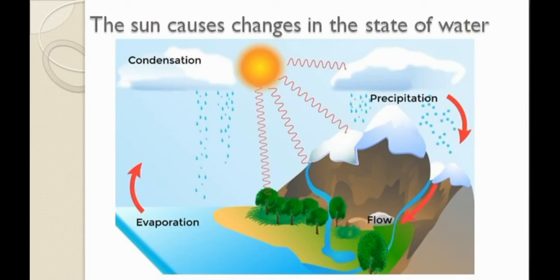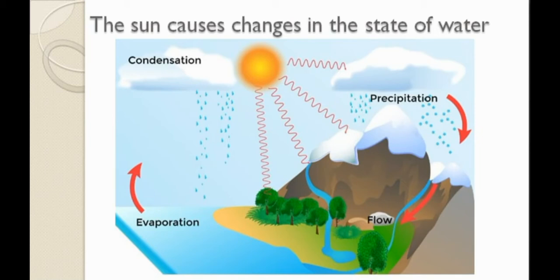Now let's see how the sun causes changes in the states of water. Clouds bring us rain because the heat of the sun changes water into water vapor — this process is known as evaporation. When the water vapor rises up and forms clouds, the water vapor has changed back into water; this process is known as condensation. When the clouds become too heavy they fall as rain, and water vapor falls as snow when the atmosphere is extremely cold.